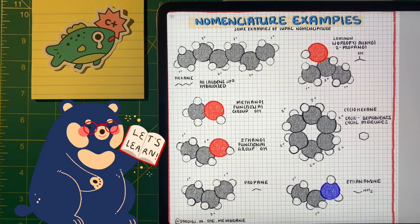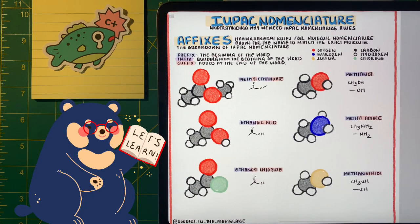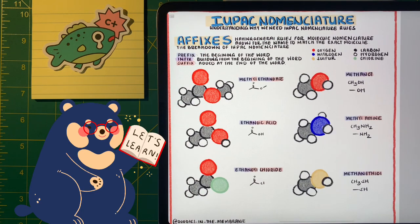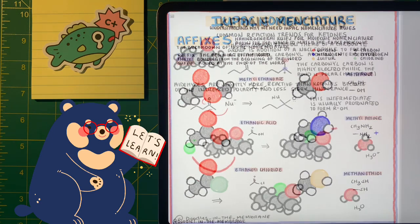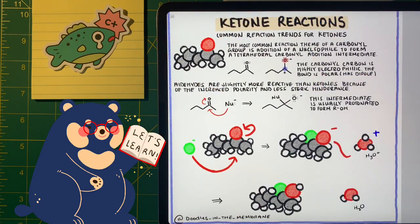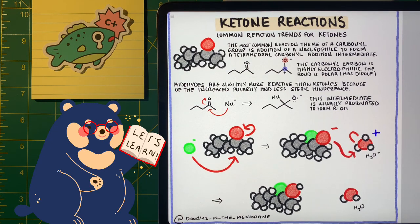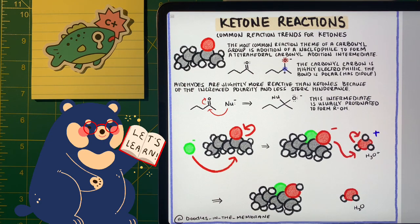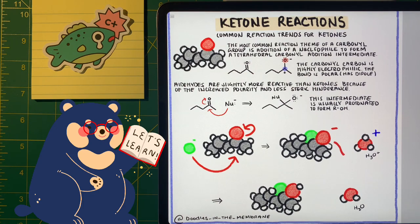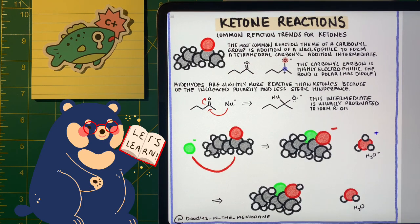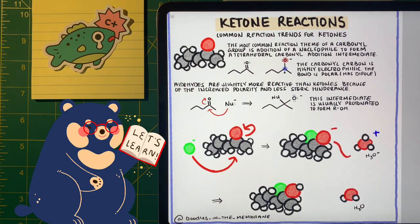For example, let's take an aldehyde or a ketone. We know that carbon on the carbonyl, that carbon connected to the oxygen through that double bond, is electrophilic. Because that oxygen is pulling electron density off of the carbon through that polar covalent bond. We can see here with this example that that nucleophile, in green, is attacking the carbonyl carbon because it's electrophilic for being attached to that oxygen. When the nucleophile attacks that electrophilic carbon, it's going to break the bond and throw electrons onto the oxygen. And hence, this is the first step in the common reaction trends of ketones.